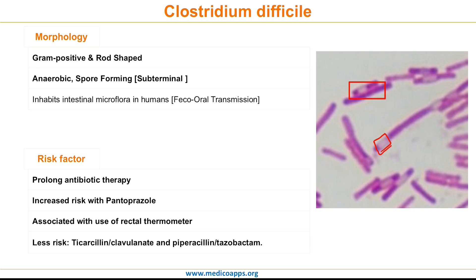Most antibiotic classes, like fluoroquinolones, penicillins, and cephalosporins, increase the risk of Clostridium difficile pathogenicity. There are two specific classes of antibiotics which have lesser risk: ticarcillin with clavulanate and piperacillin with tazobactam. These are preferred antibiotics in hospitalized patients who may require prolonged antibiotic therapy.